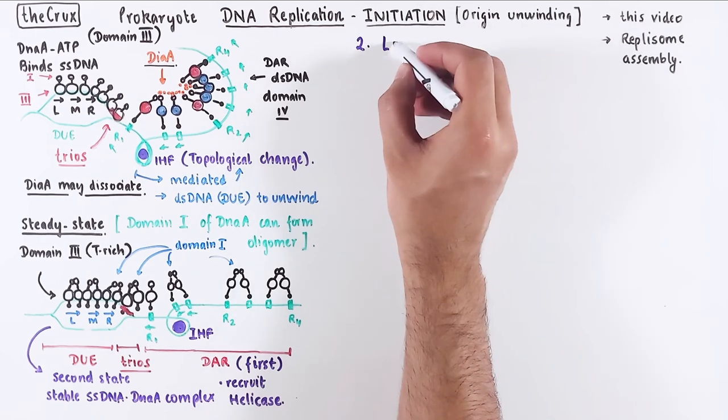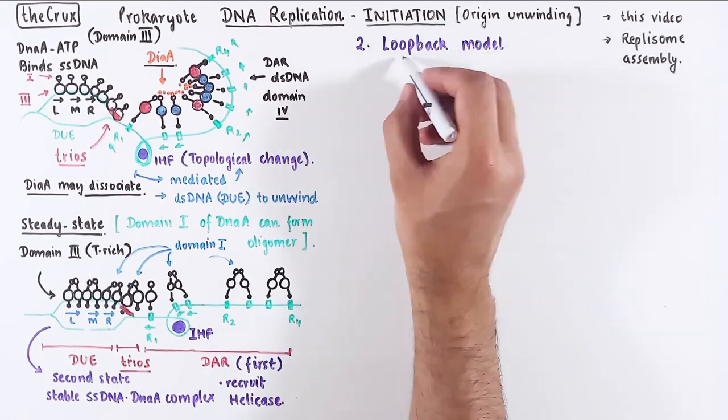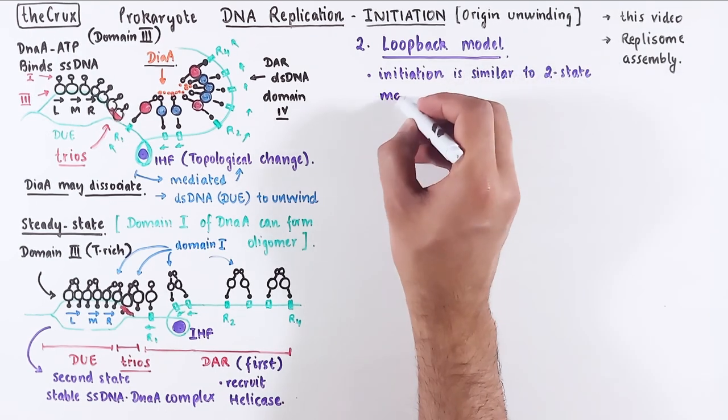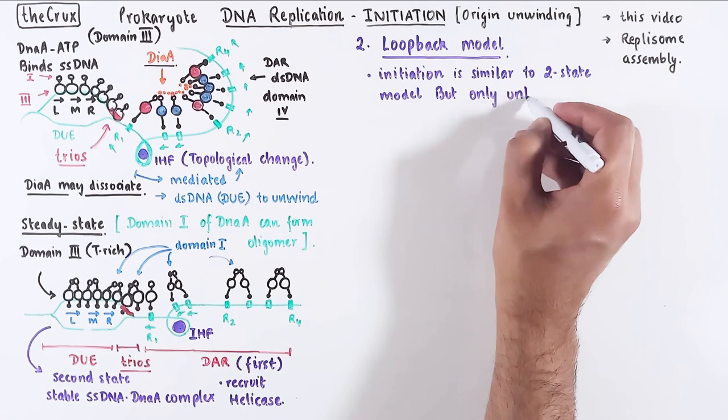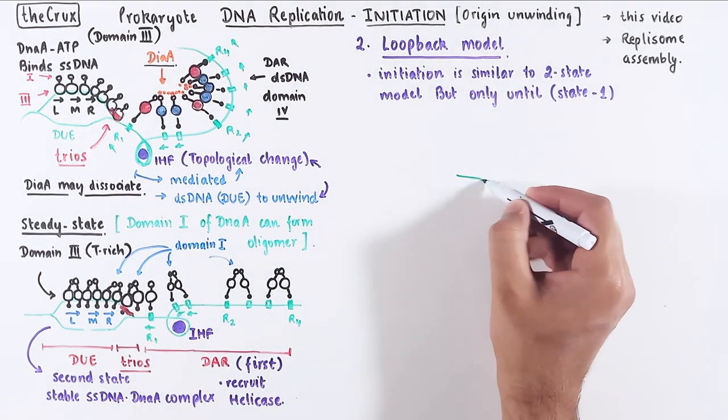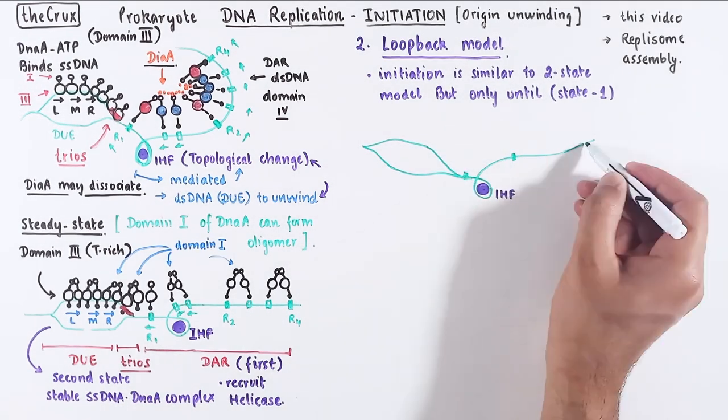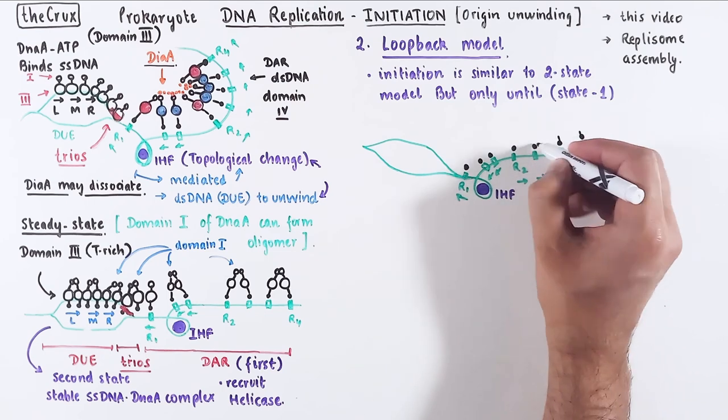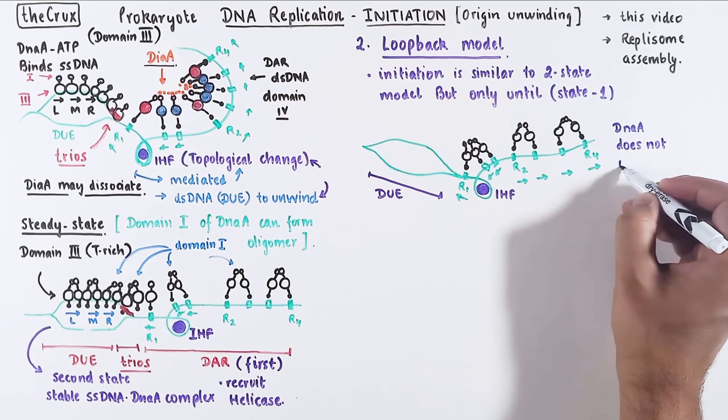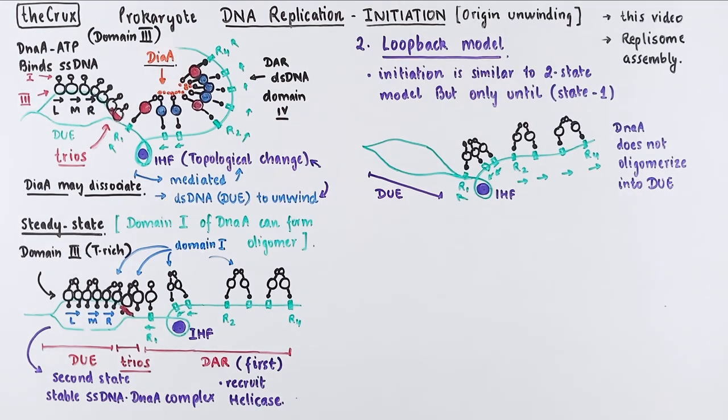Now let's switch gears and talk about the loopback model. The initiation of the loopback model is exactly the same as the state 1 of the two-state model, which is until this topologically changed state of the origin, leading to the DUE unwinding. For clarity, I will quickly draw out the steady state, where DUE is unwound. In the loopback model, the DnaA proteins do not oligomerize into the DUE region. This is in strong contrast to the two-state model, where oligomerization proceeds from the trios into the DUE region.